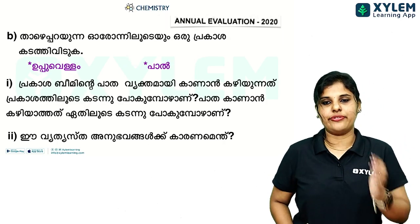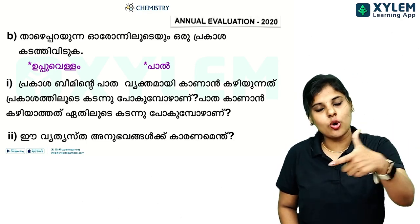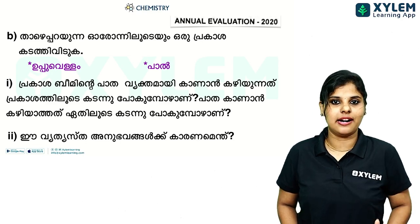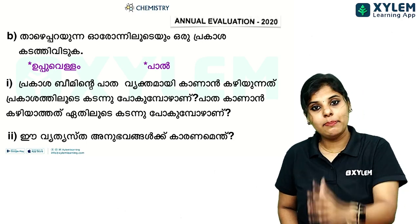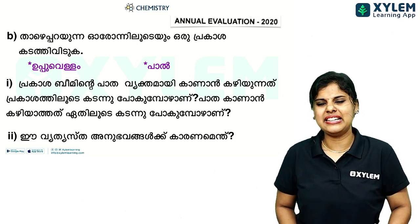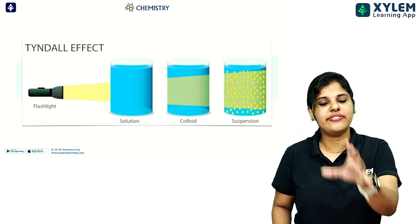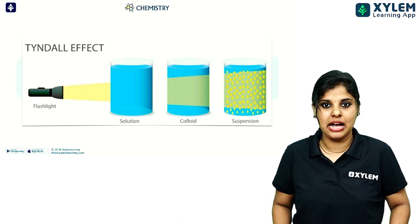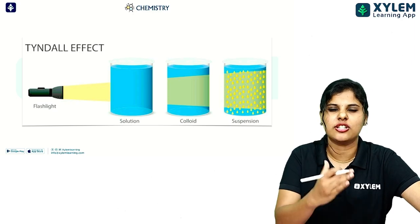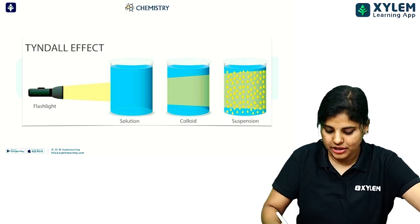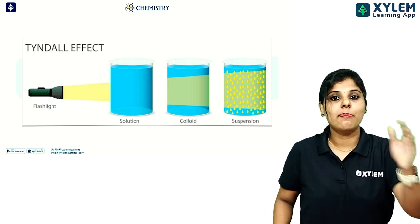Give reason for this difference. The reason is the Tyndall effect. In milk, which is a colloid, the light beam is visible. In a true solution like salt water, the path of light is not visible. Milk is a colloid and muddy water is a suspension.